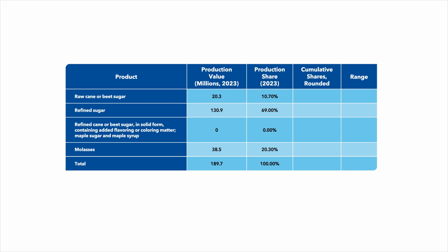To select the items, we'll set a series of ranges of the cumulative shares covering all consecutive numbers from 1 through the total share of 100. The range for the first product category, raw cane or beet sugar, runs from 1 through 10.7, which we round up to 11.